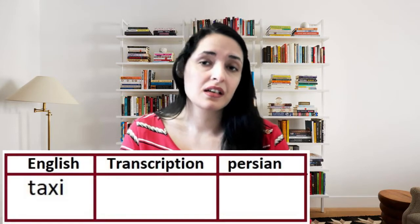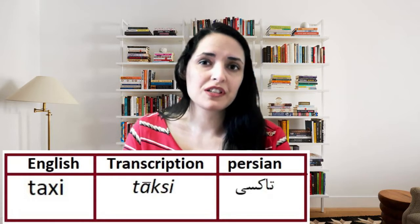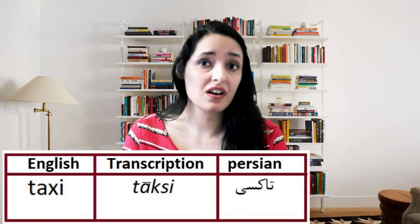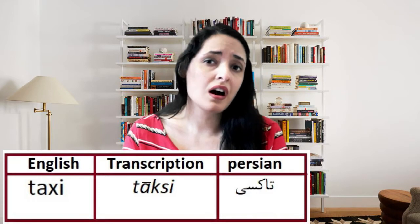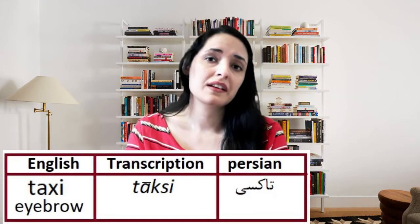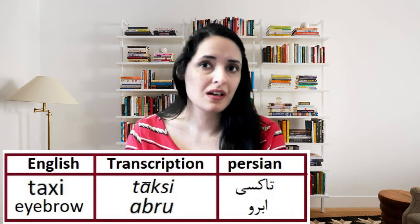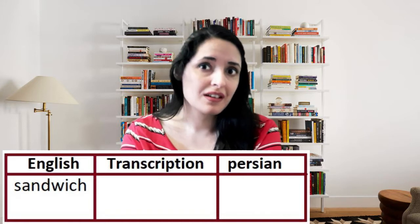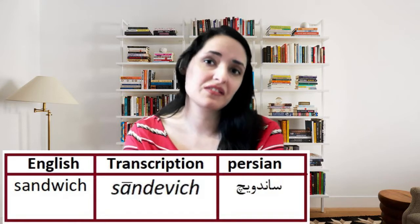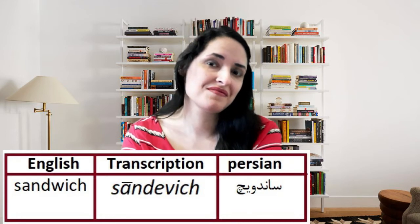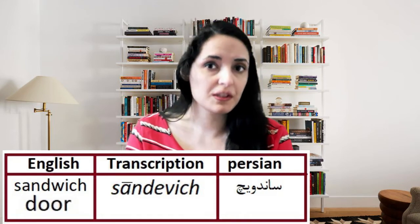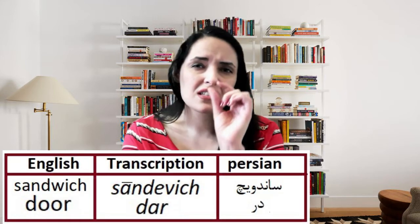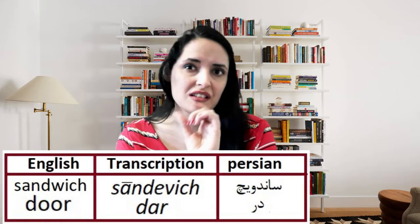Some words are slightly different in terms of pronunciation. For example, 'taxi' — in English you say 'taxi', but in Persian we say 'taksi'. Or 'eyebrow' — in Persian we say 'abru'. Another example is 'sandwich' — in Persian we say 'sandvich'. And 'door' in Persian is 'dar'. There is just a slight difference in pronunciation with these words.